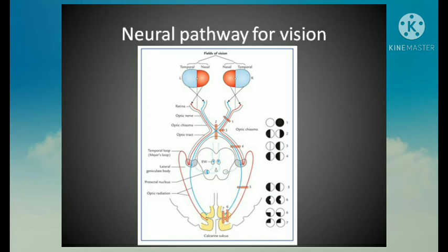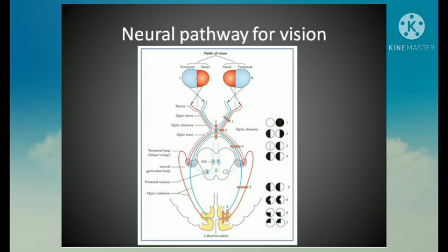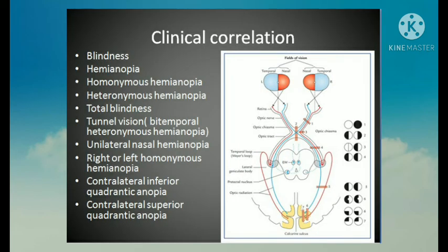The fibers from the temporal half remain uncrossed at the optic chiasma and run in the optic tract to terminate in the ipsilateral lateral geniculate body. The fibers from the macula lutea behave in exactly the same manner. The cell bodies of the third-order neurons are located in the lateral geniculate body. Their axons form the optic radiations, which project into the visual cortex. Blindness is conventionally described with reference to the field of vision rather than with reference to the part of the retina.